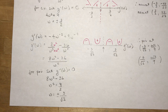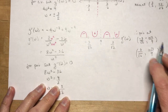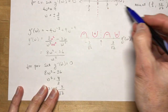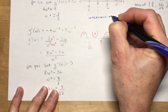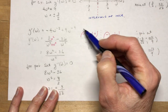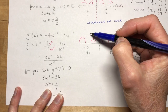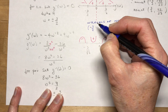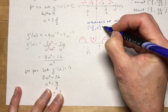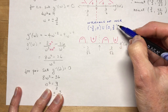Now I need to state the intervals of increase and decrease, then sketch. Intervals of increase: just read right off the sign chart for g'(w) — where is it positive? That's (−3/2, 0) union (0, 3/2).